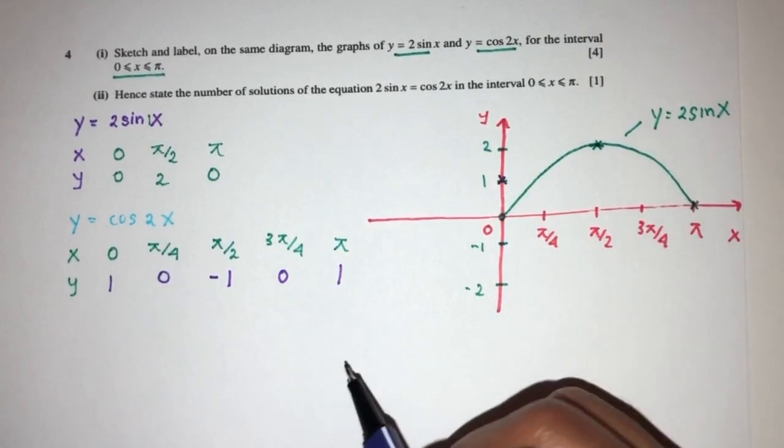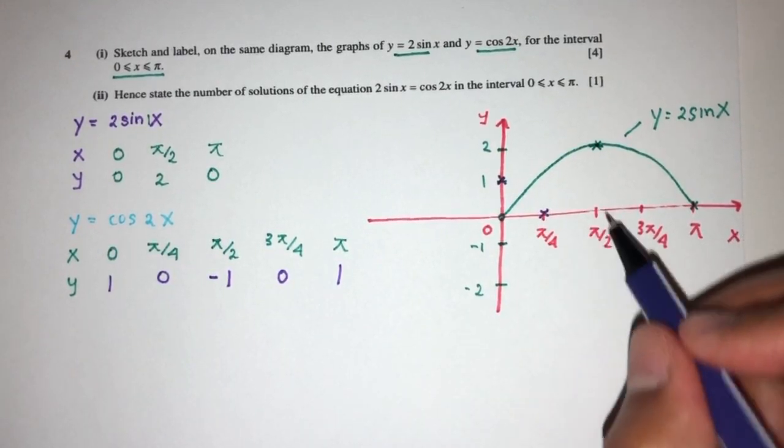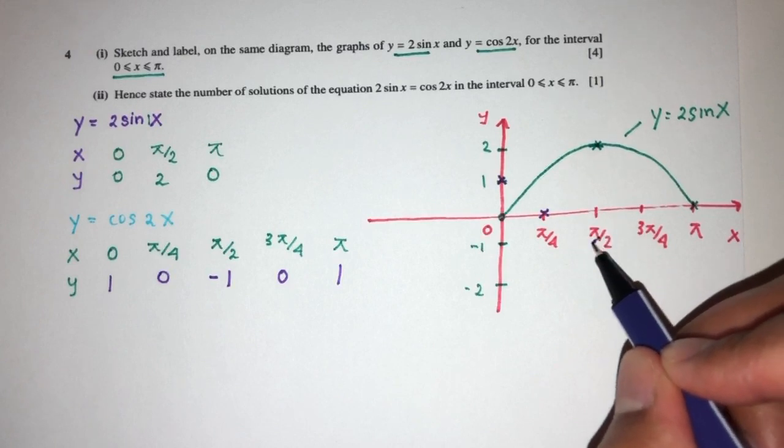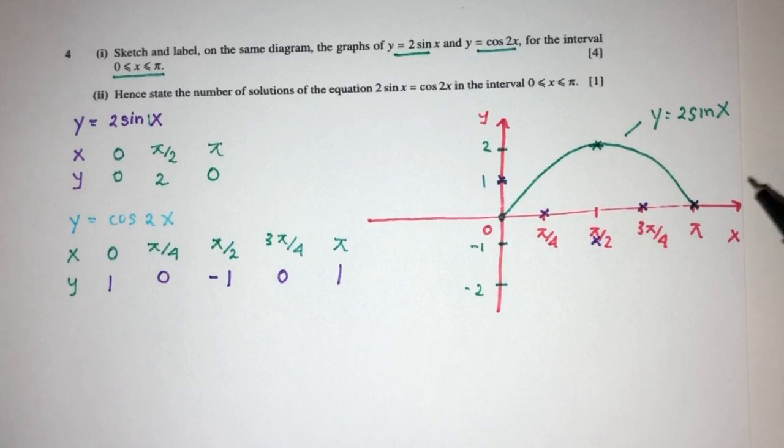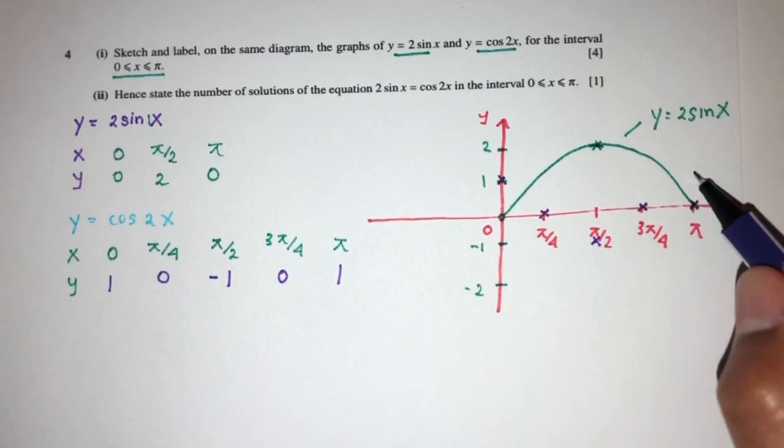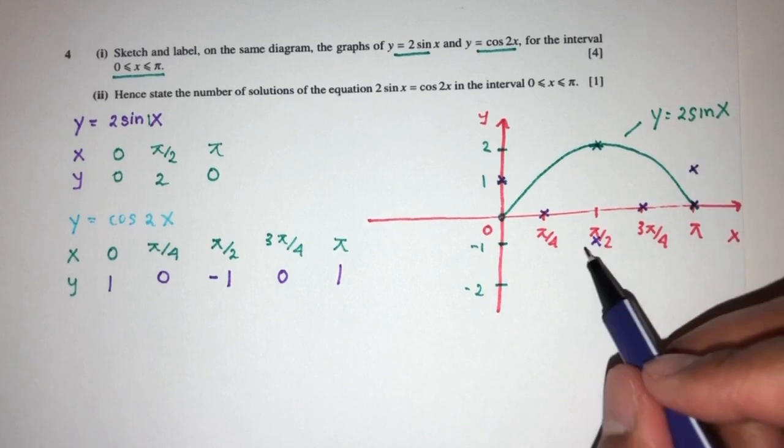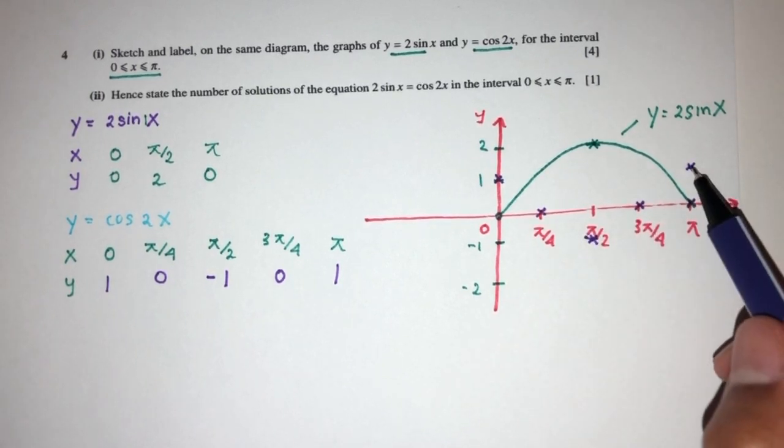So first one (0, 1), that should be here. This would be 0 and this should be 1. My apologies, that should be somewhere over here. So we have this, something like this.